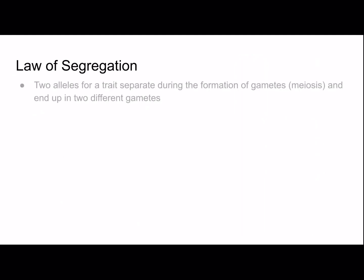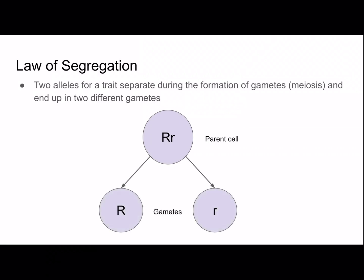The law of segregation states that the two alleles for a trait will separate during the formation of gametes — during meiosis — and will end up in two different gametes. So let's use the round trait. If the parent cell is heterozygous for round peas, the gametes will have one dominant and one recessive. That's why there's a 50-50 chance that the offspring will inherit a recessive or dominant allele from this parent.